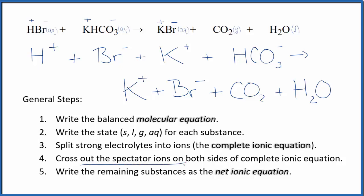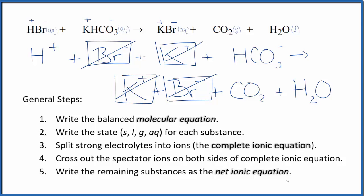Now we can cross out spectator ions - ions that appear on both sides. The bromide ion appears in both reactants and products, so that's a spectator ion. The potassium ion also appears on both sides, so it's a spectator ion too. We cross both out.